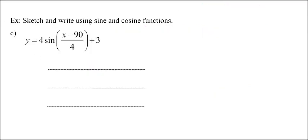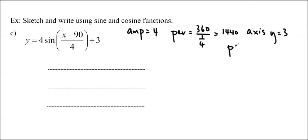y equals 4 sine x minus 90 over 4. So this is actually already factored. So I don't have to worry about it. My amplitude is going to be equal to 4. My period is equal to 360 over 1 quarter. So that is equal to 360 times 4 is 1440. And my axis is y equals 3. I just remembered I forgot my phase shift. My phase shift is 90 to the right. All right.